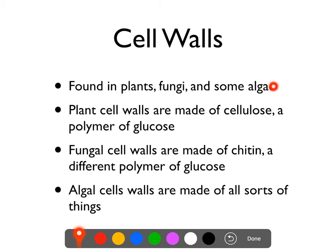Some algae — algal cell walls can be made of all sorts of things. We talked about some earlier in the class, but agarose is one, glass, cellulose, and sometimes other stuff. And some of them won't have cell walls at all.